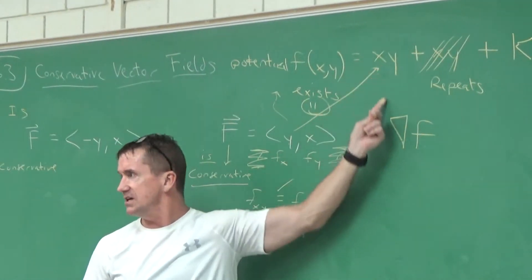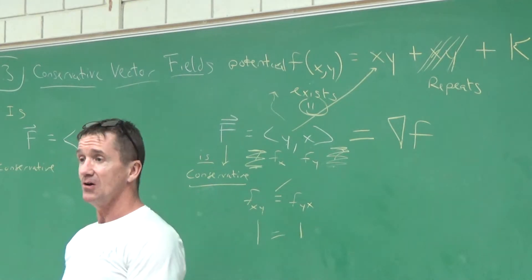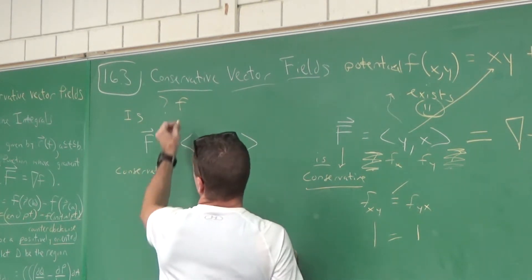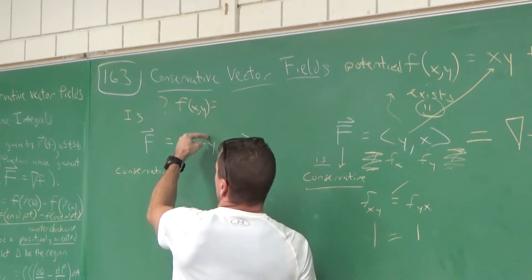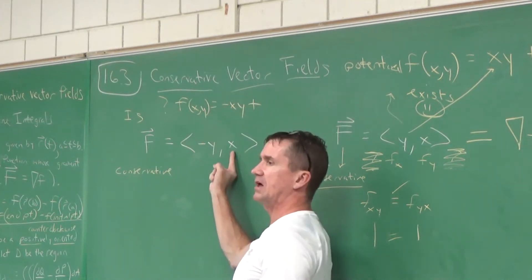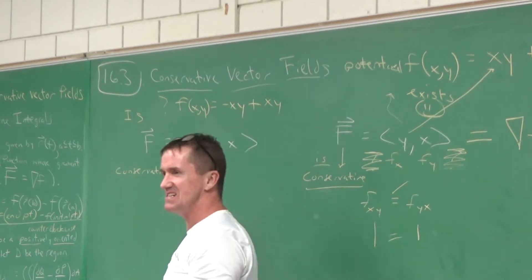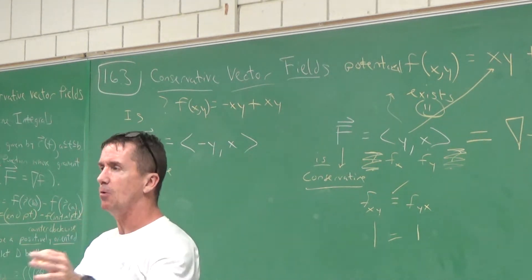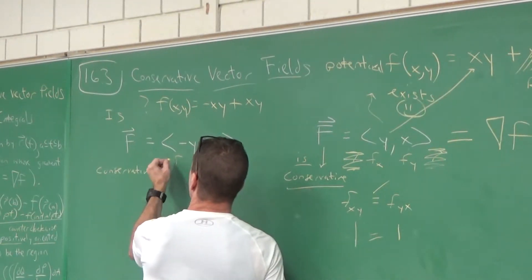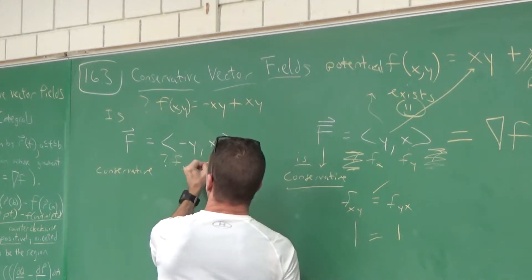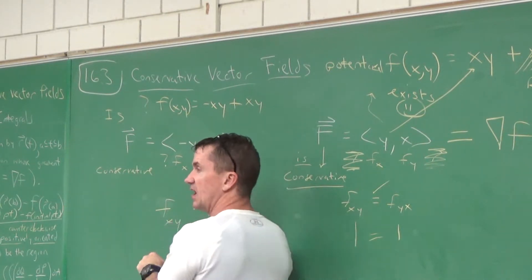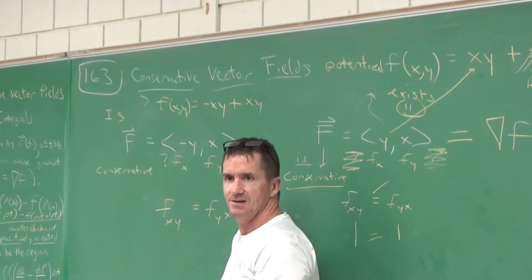There's a quick way to check. You could try integrating to see if a potential function emerges, but the best way is to use Clairaut's theorem. Think of the x-component as possibly fx and the y-component as possibly fy. Then check: does fxy equal fyx? What's the derivative of the x-component with respect to y? What's the derivative of the y-component with respect to x? Are they equal? No — this vector field is not conservative.